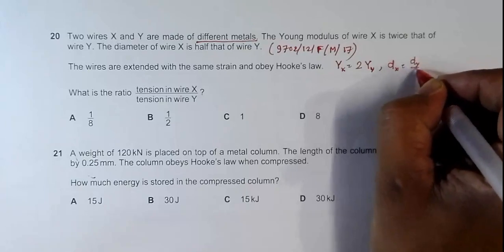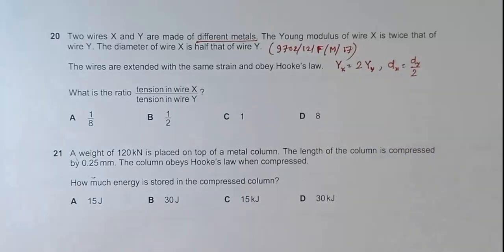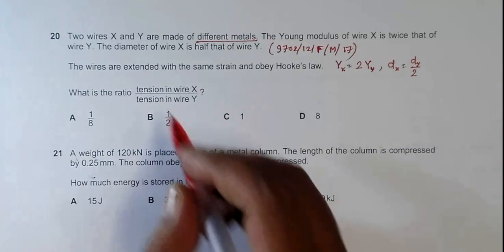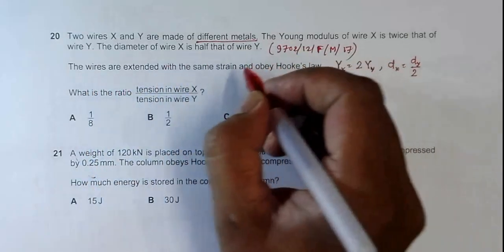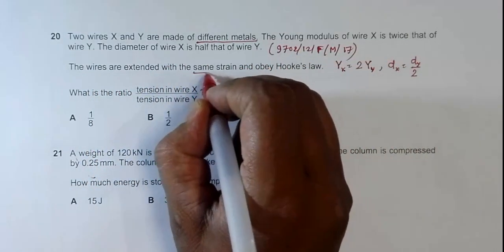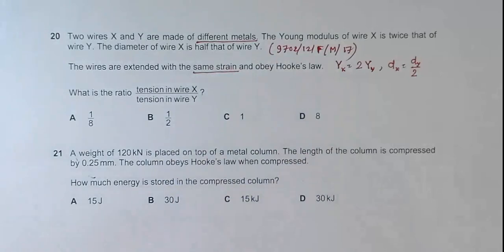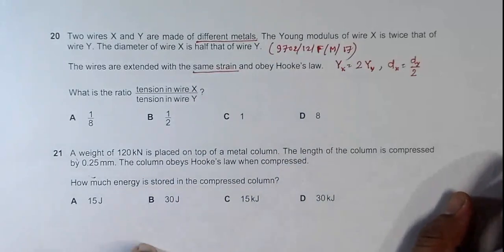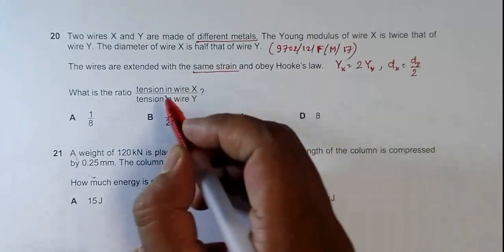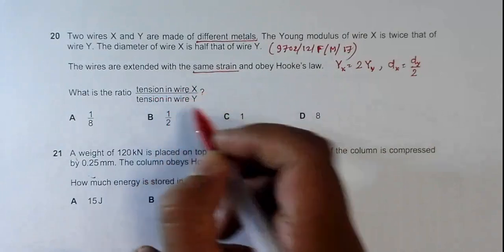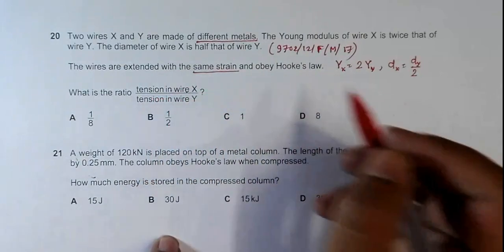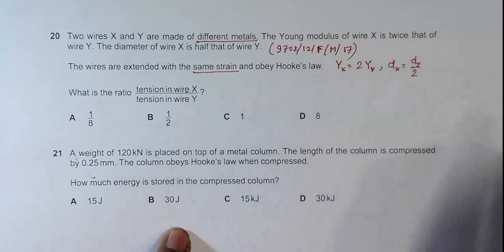The diameter of X is half the diameter of Y. The wires are extended with the same strain, and they obey Hooke's law. We need to find the ratio of tension developed in wire X to tension developed in wire Y.